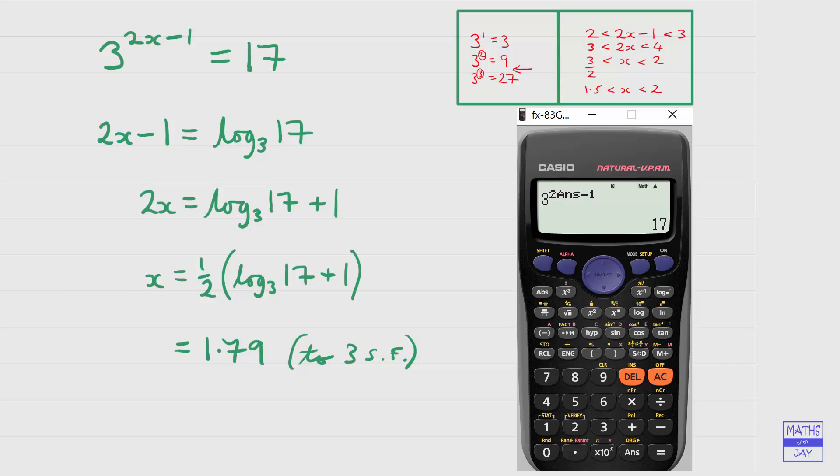Now the next thing to do is to check that our approximate answer also gives us approximately 17. So we could either go back and edit what we've just keyed in here, or we could start from scratch again. So 3 to the power, and then we want to multiply 2 by 1.79, and then subtract 1. Remember this time we're not expecting to get exactly 17, but approximately 17. And that's what we get, that's fine.